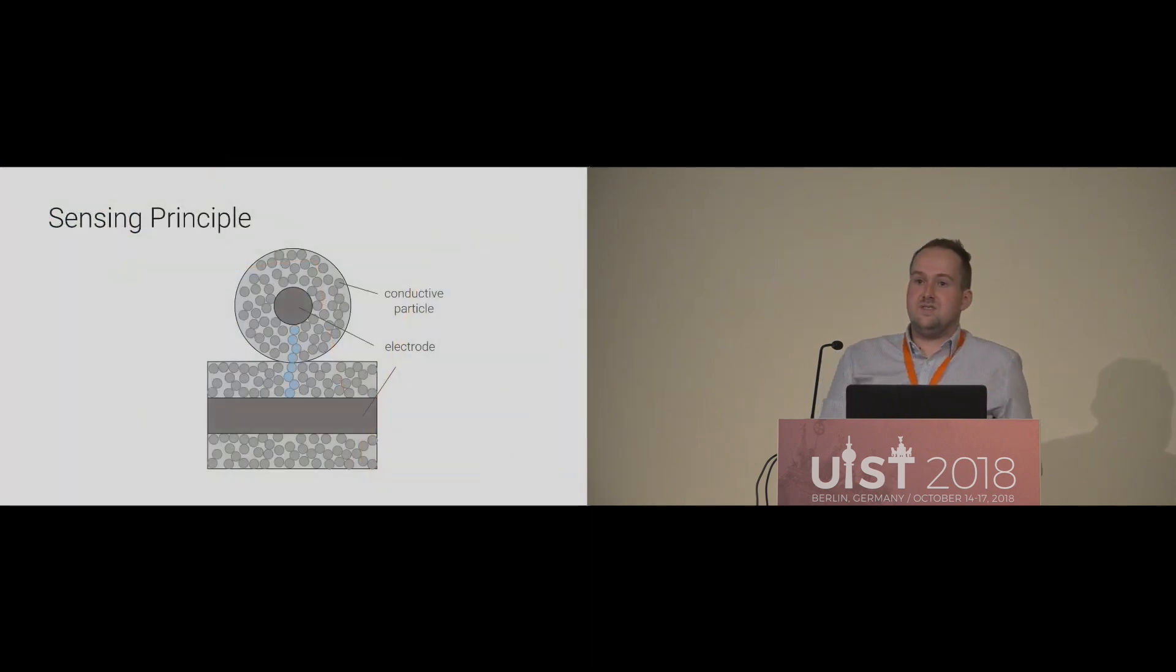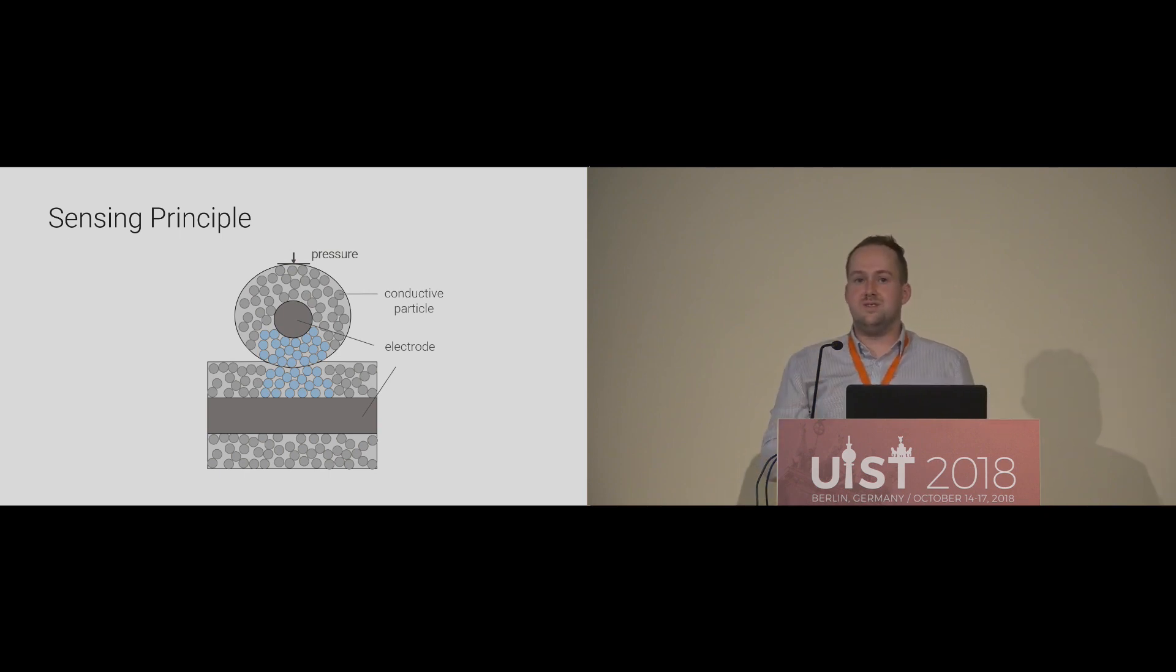The yarn consists of a highly conductive metallic core which is coated with a carbon-based polymer. Two of these yarns intersecting each other already build a pressure sensor. Applying mechanical stress onto the intersection presses the conductive particles together and causes a resistance drop between the two electrodes.